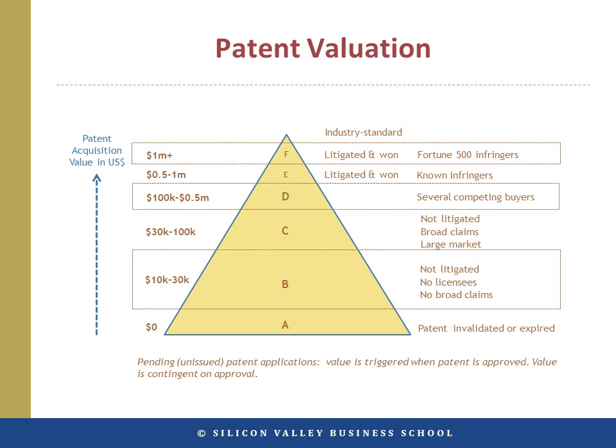Group B represents patents with a value of $10,000 to $30,000 each. These are valid US patents that do not have particularly broad claims, are not in a particularly large market, have no licensees, and have not been litigated.